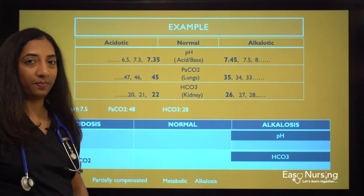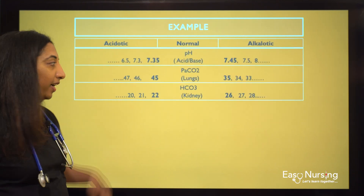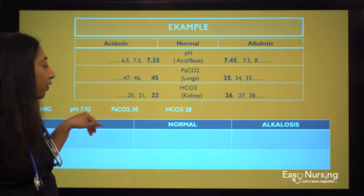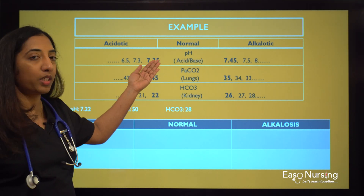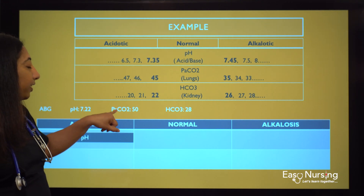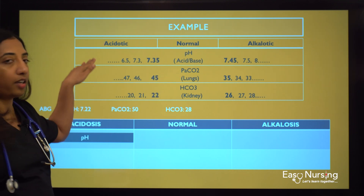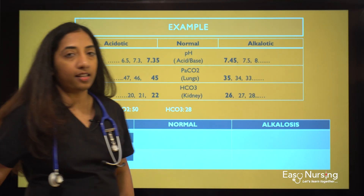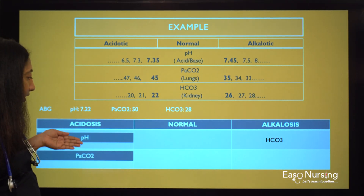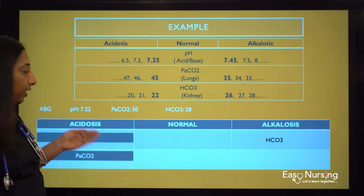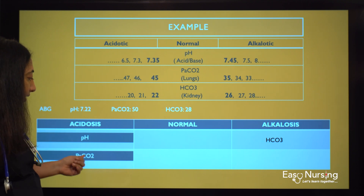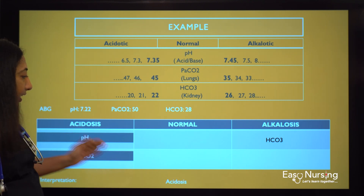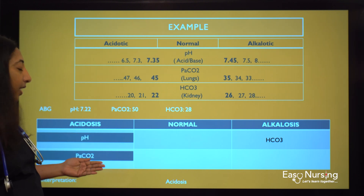Second example: pH is 7.22, which is below 7.35, so it is acidotic. PaCO2 is 50, which is above 45, so it comes under acidotic again. Bicarb is 28, which is above 26, so it comes under alkalotic. We have two values under acidosis, so our problem is acidosis. Since PaCO2 is under acidosis, the problem is respiratory.